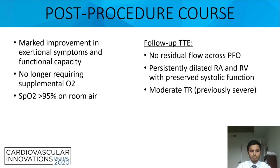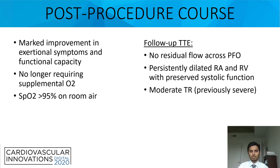Post-procedurally, there was a marked improvement in her exertional symptoms and functional capacity. She no longer required any supplemental oxygen, and her SpO2 was greater than 95% on room air. Her follow-up echo showed no residual flow across the PFO, persistently dilated right atrium and right ventricle, and moderate tricuspid regurgitation, which was previously severe. There are no plans for surgical intervention given the marked improvement in her symptoms and reduction in the TR.